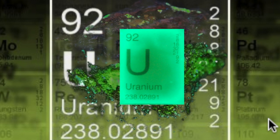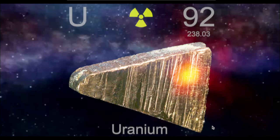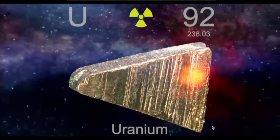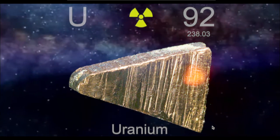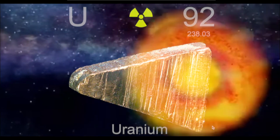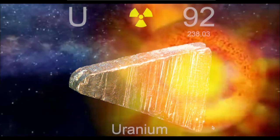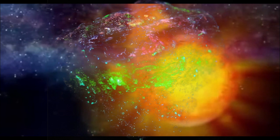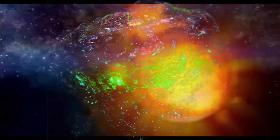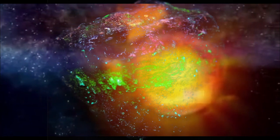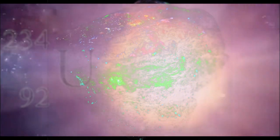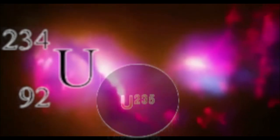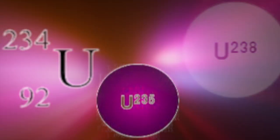Uranium is a natural and commonly occurring radioactive element that contributes to natural background radiation levels. Natural uranium is a mixture of three types of isotopes: Uranium 234, Uranium 235, and Uranium 238.